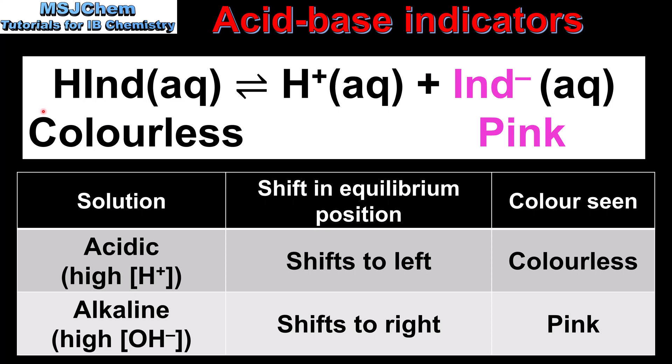So in other words, to be an Acid Base Indicator, the unionized form and the ionized form — or the weak acid and its conjugate base — must have different colors in solution.